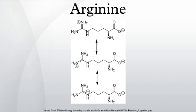On a whole-body basis, synthesis of arginine occurs principally via the intestinal-renal axis, wherein epithelial cells of the small intestine, which produce citrulline primarily from glutamine and glutamate, collaborate with the proximal tubule cells of the kidney, which extract citrulline from the circulation and convert it to arginine. Impairment of small bowel or renal function can reduce endogenous arginine synthesis, thereby increasing the dietary requirement.